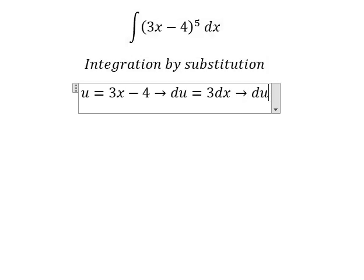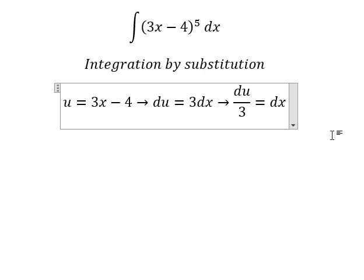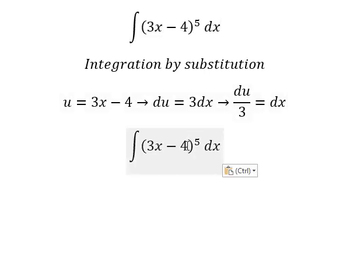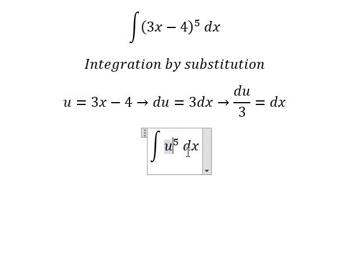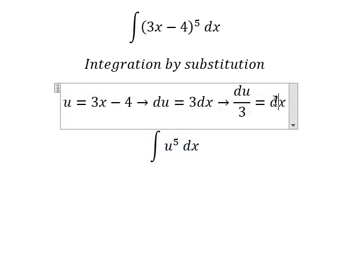The derivative is 3, so we divide both sides by 3 to get du/3 = dx. Now we substitute into the integral, changing it to u form.